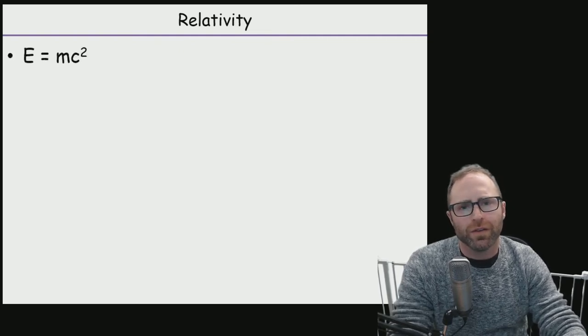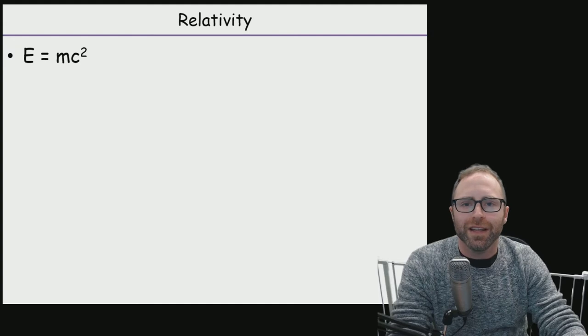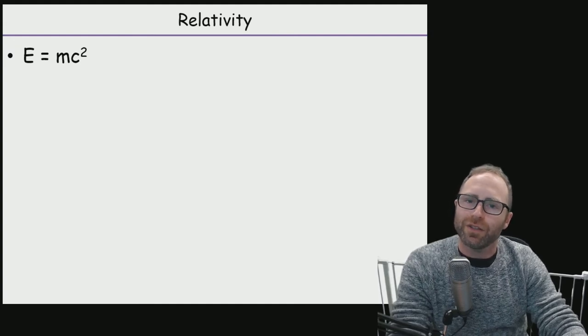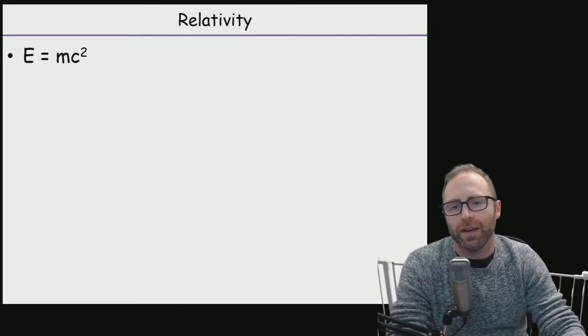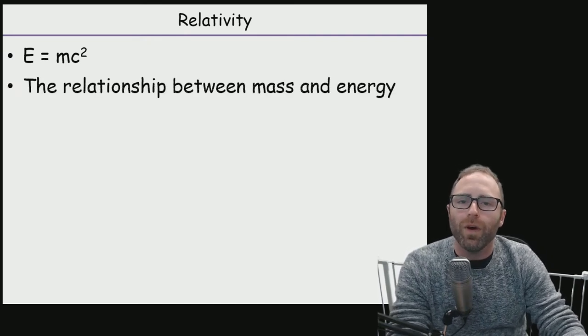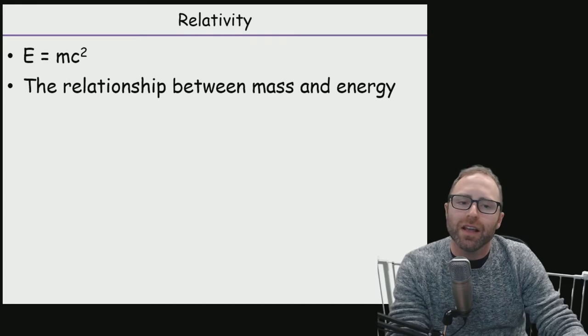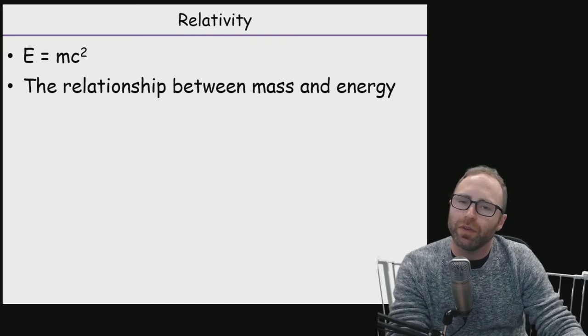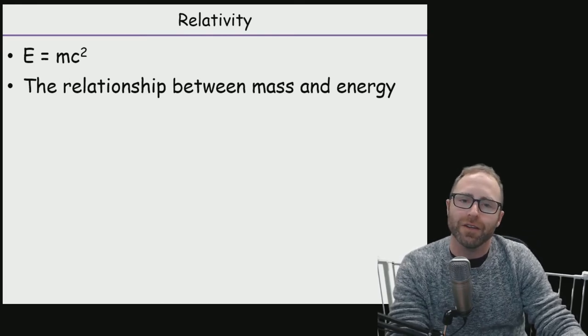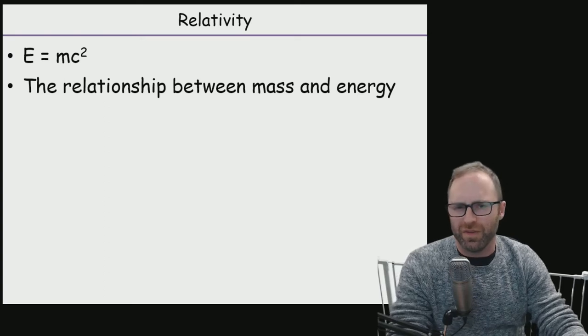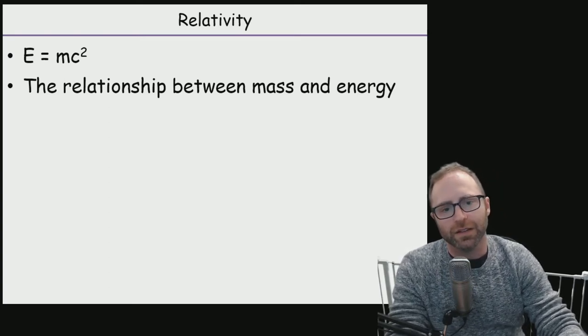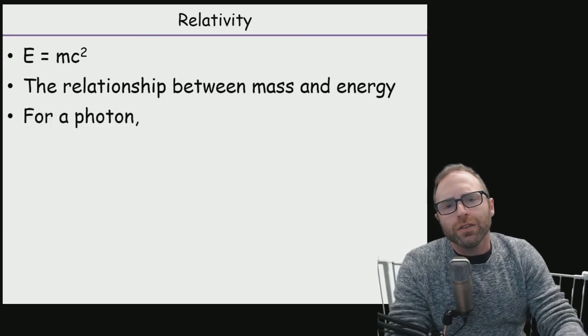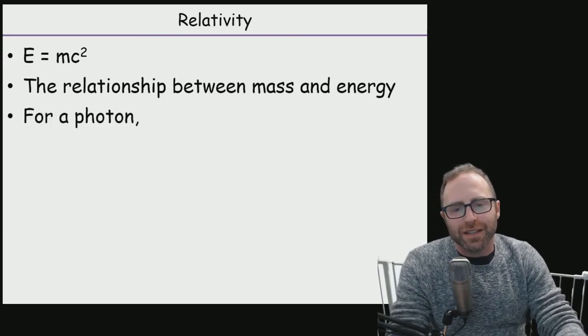So here's this little equation, E equals mc squared, shows up in pop culture occasionally. You might have heard of it, you might not have. Basically, what it's going to tell us is that there is a relationship between mass and energy. There's a guy named Albert Einstein, you might have heard of him. He kind of concocted all this stuff up. So what does that actually mean, this E equals mc squared?